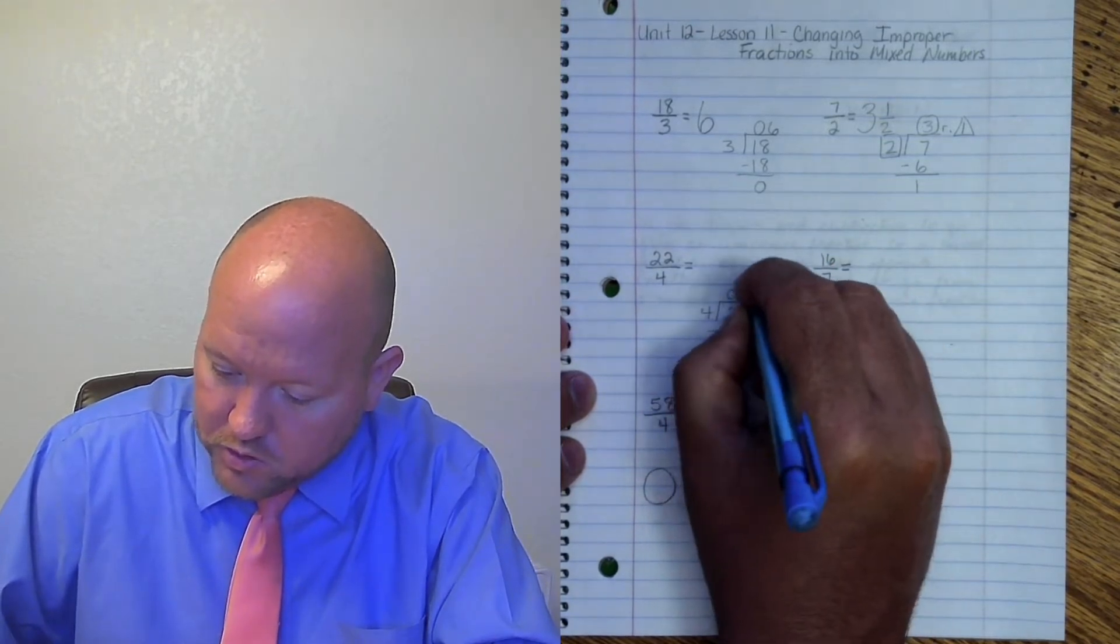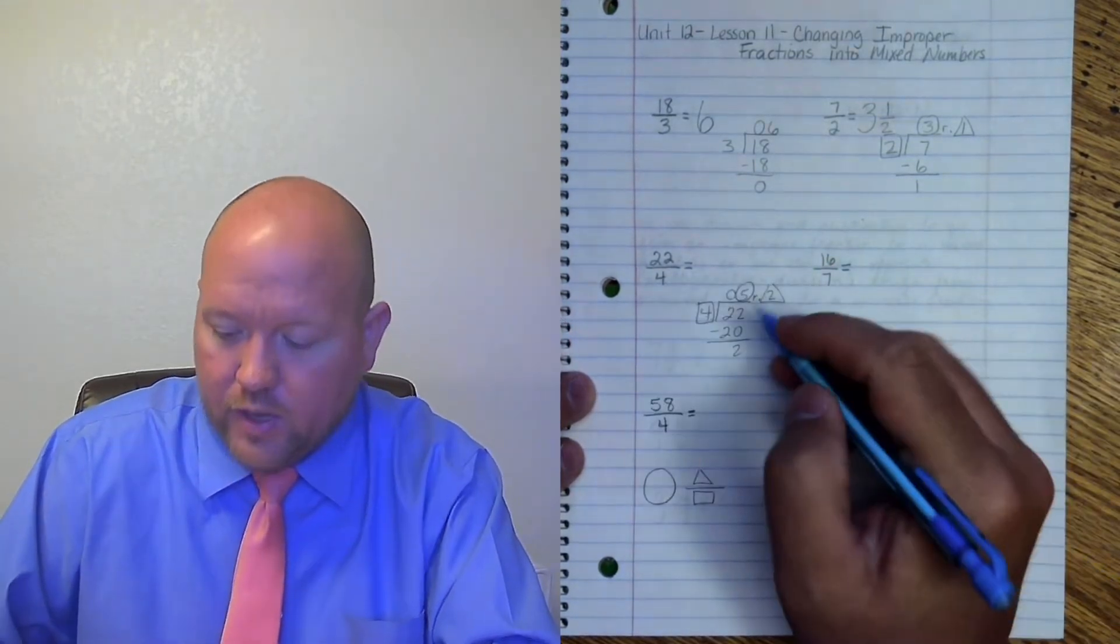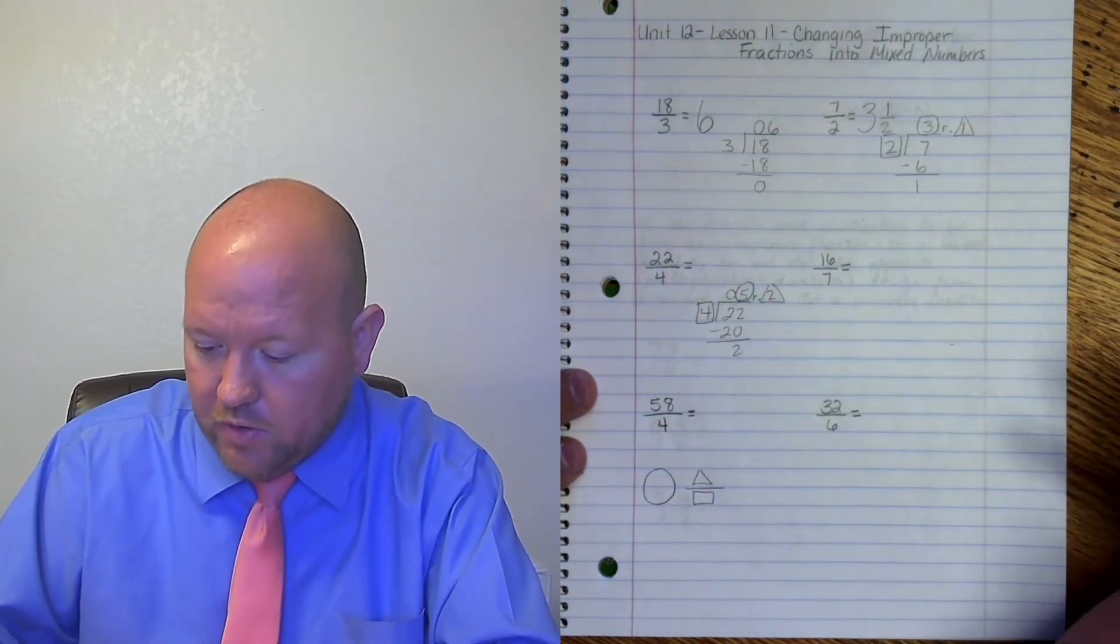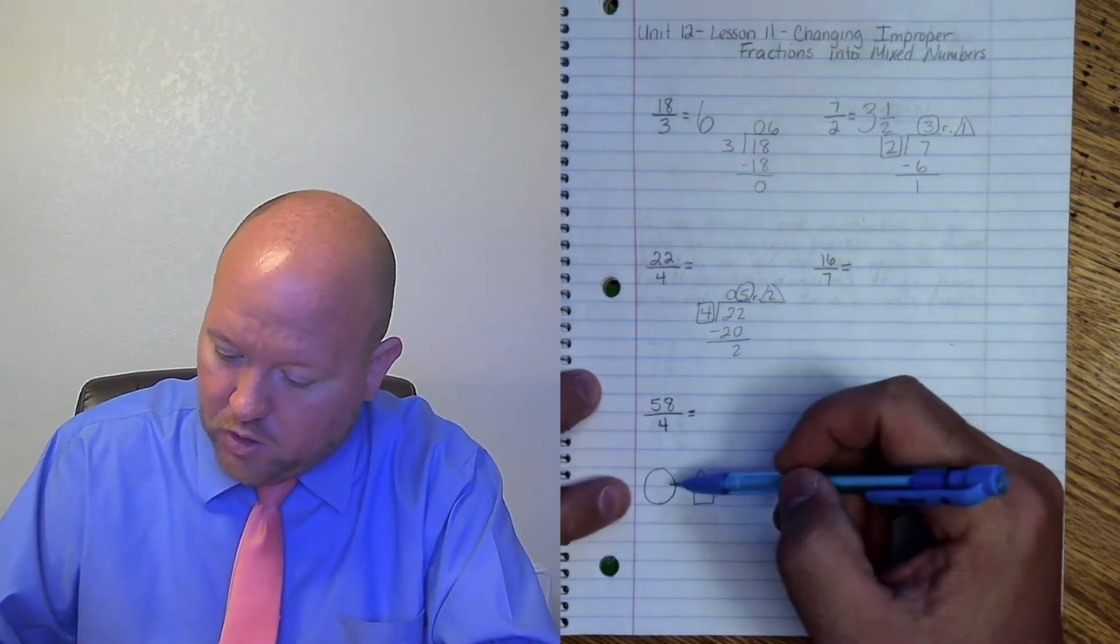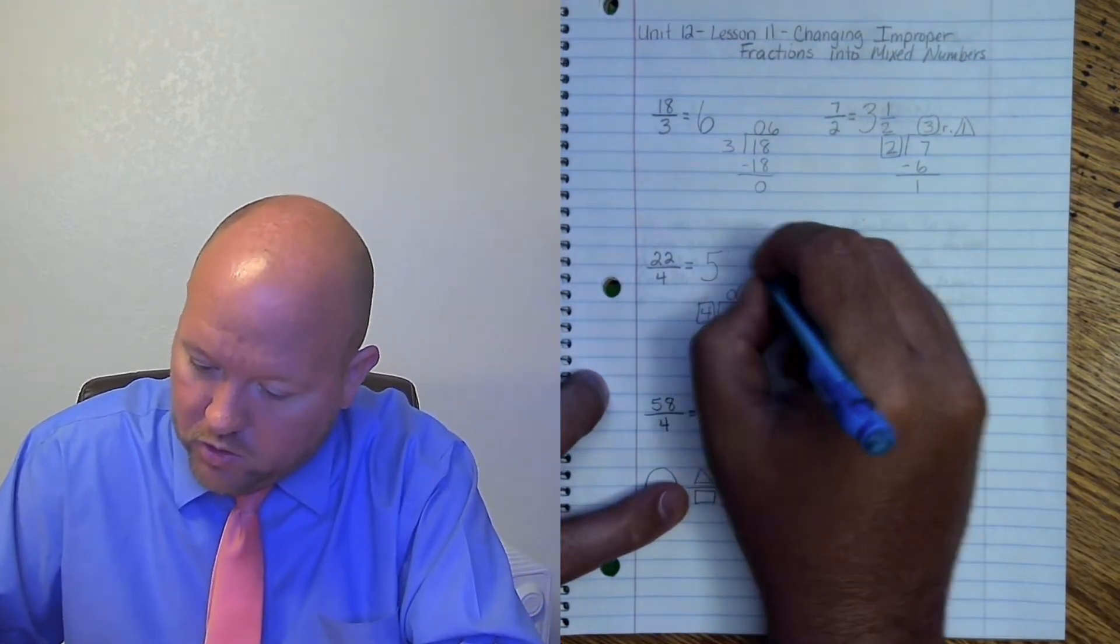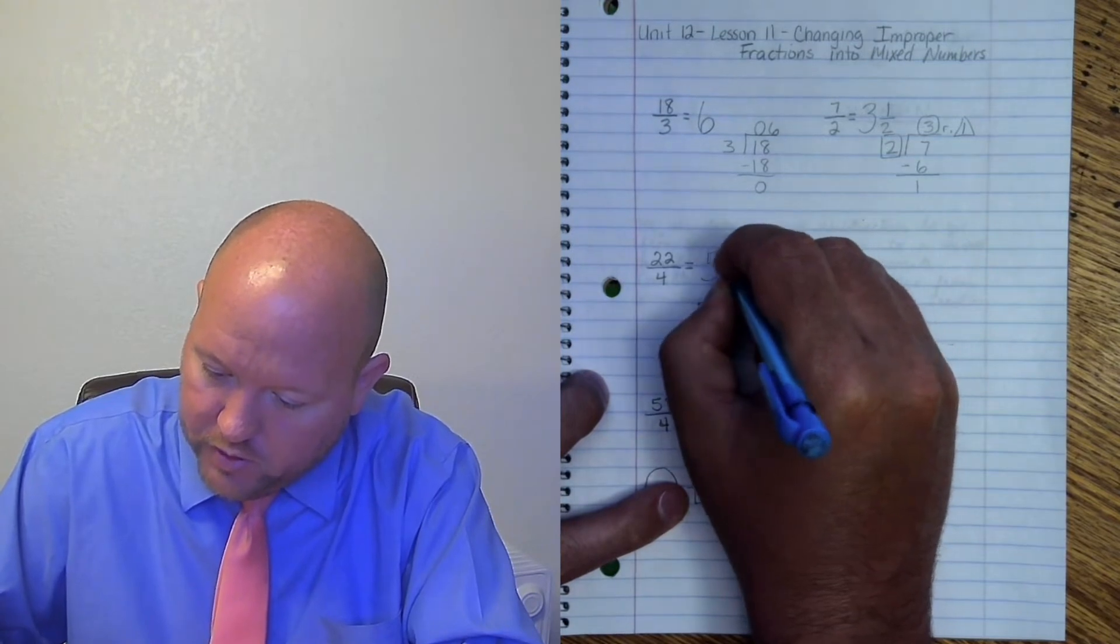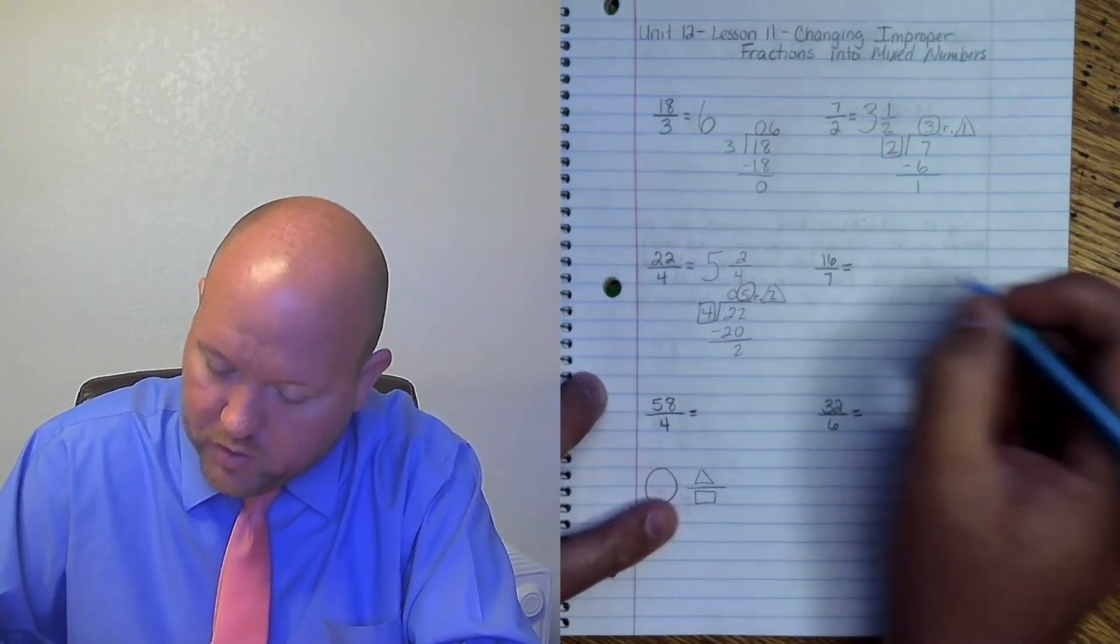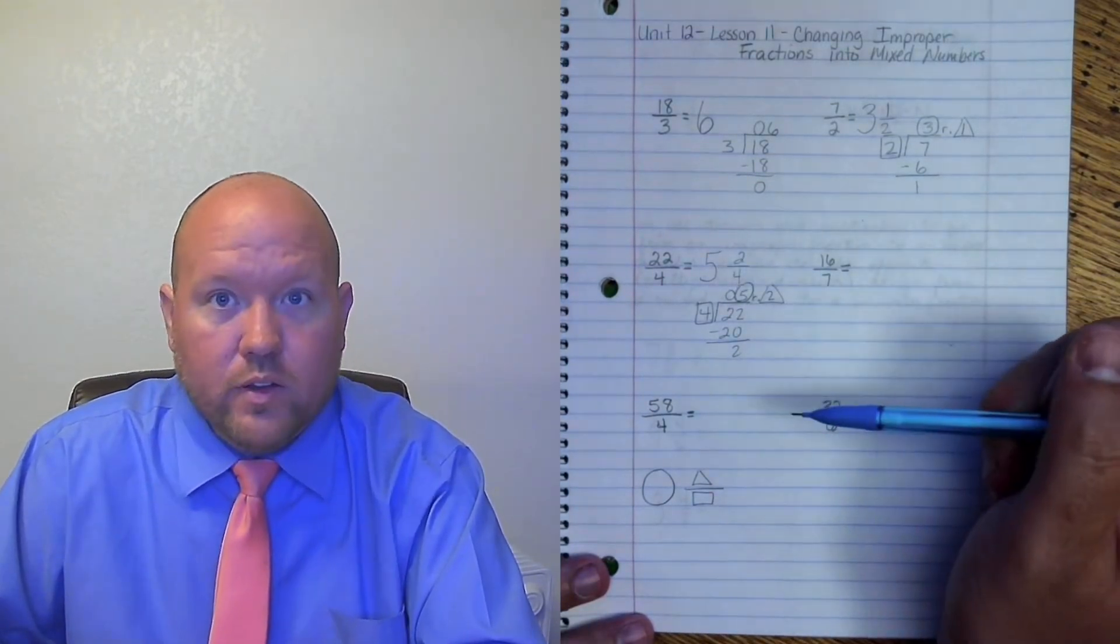Triangle circle square. That's 0 in the front. We don't need it. It doesn't add any value to the number. Circle goes first. So that's going to be the 5. Triangle goes on top. That's a 2. And 4 is the box. It goes on the bottom. So here we have 5 and 2 fourths.